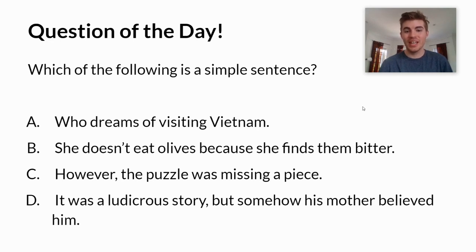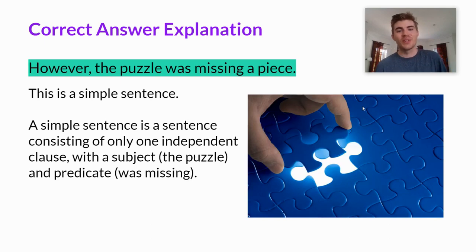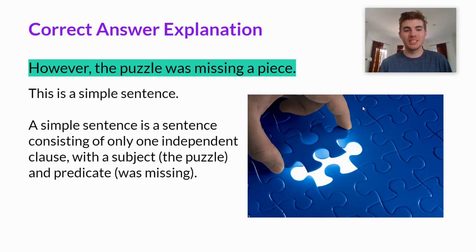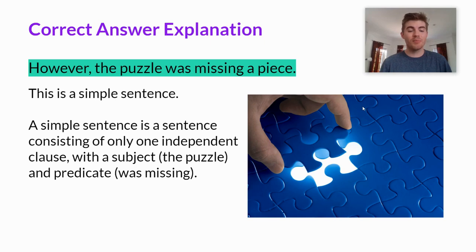We are going to reveal the answer now. The correct answer: however, the puzzle was missing a piece — this is a simple sentence. This was the only simple sentence. A simple sentence consists of only one independent clause, with the subject being 'the puzzle' and the predicate being 'was missing.'